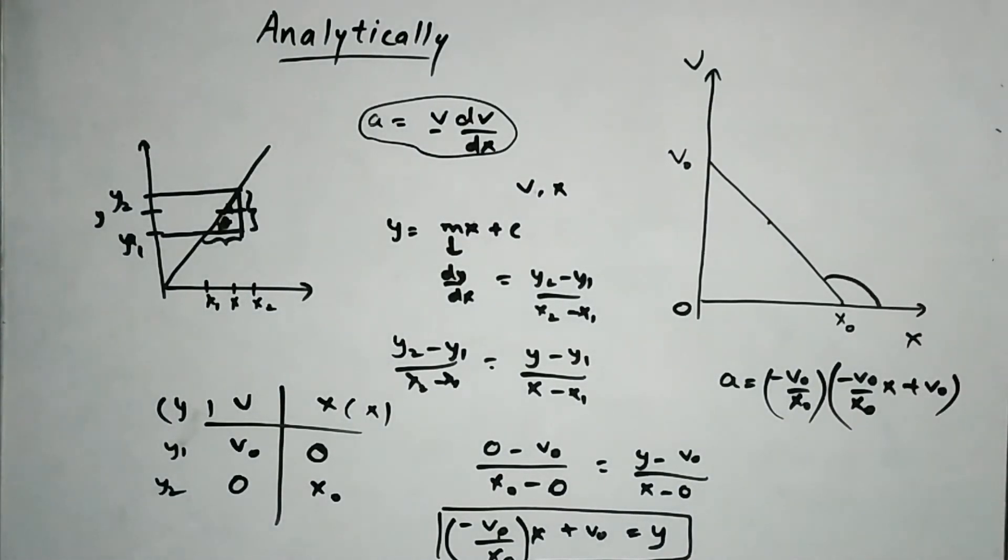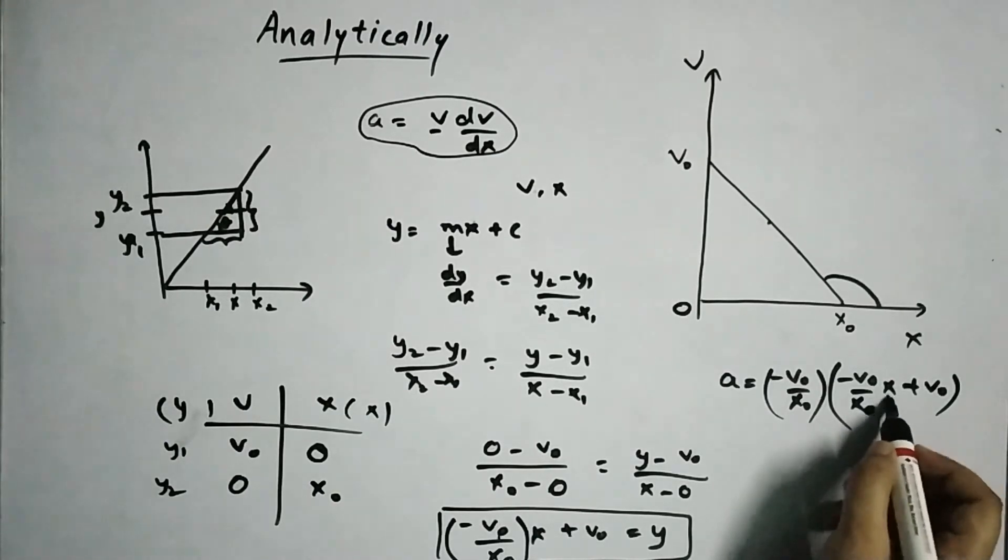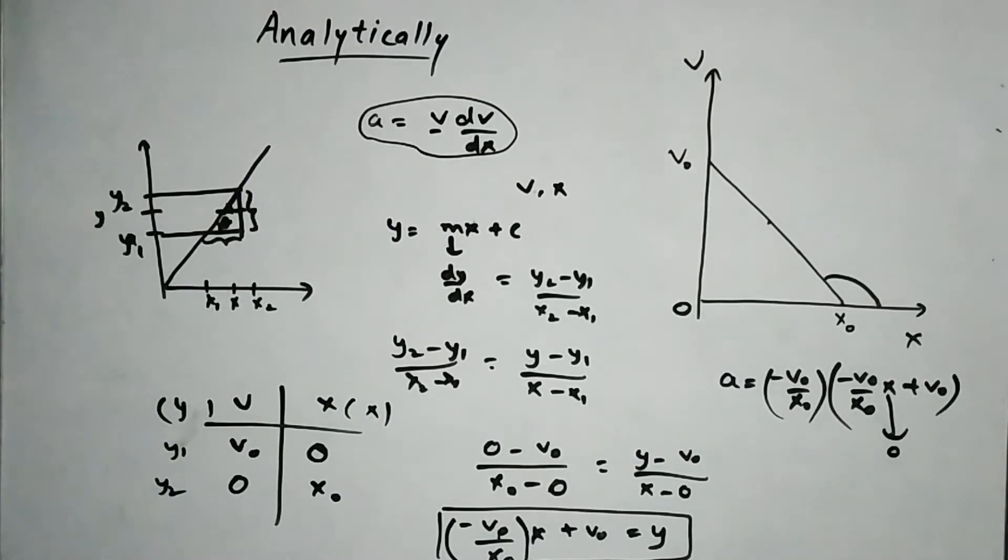So it will be minus v0 by x0 into v. So if you put x equals 0, you should get, you should get a equals minus v0 squared by x0. So this is pretty much a negative quantity. And if you put x equals x0,